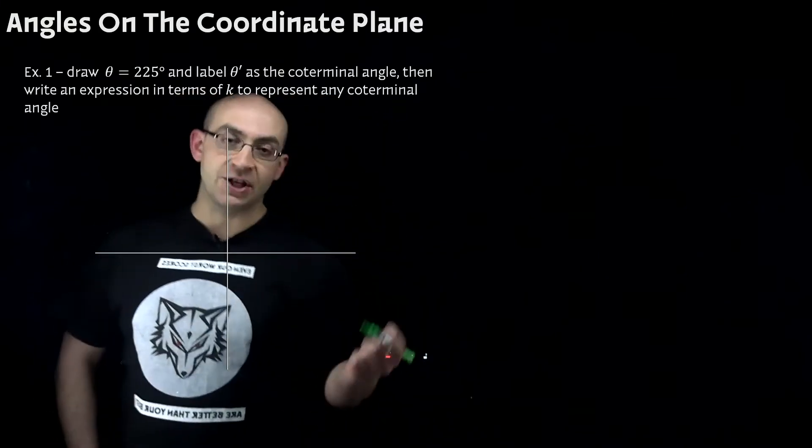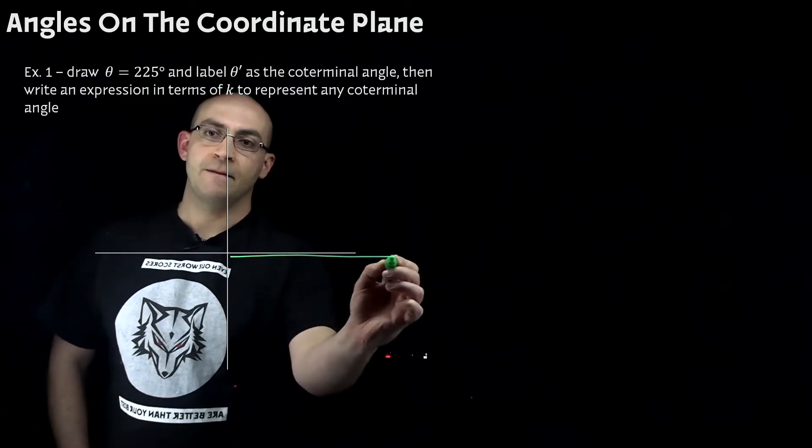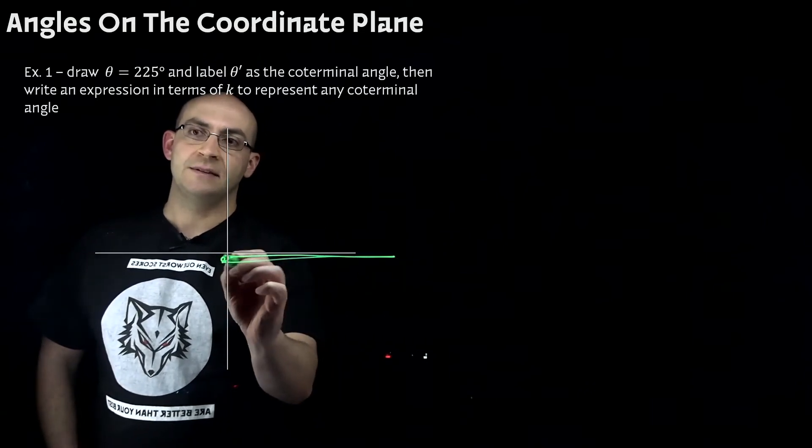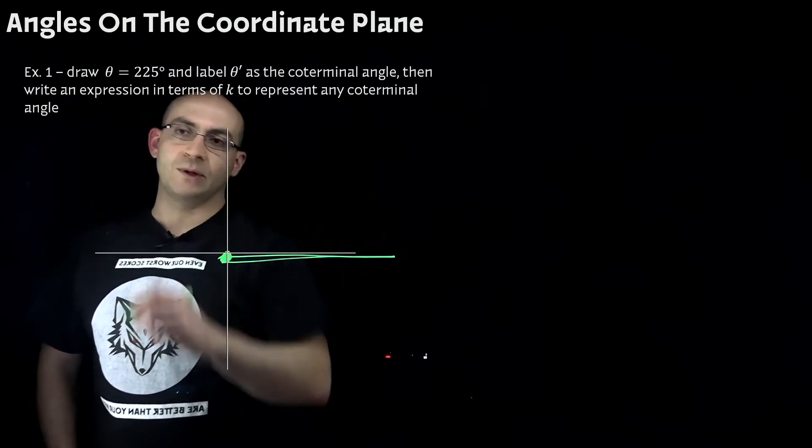So 225 degrees, it certainly doesn't show as negative. So that means I'm going to start from the initial point here or the initial side. And I'm going to go up and around through quadrant one and quadrant two.